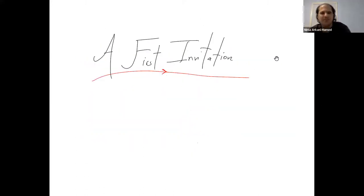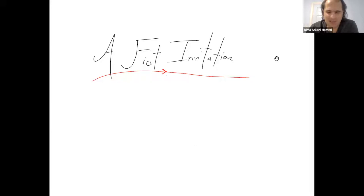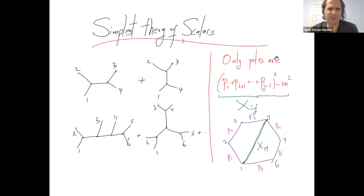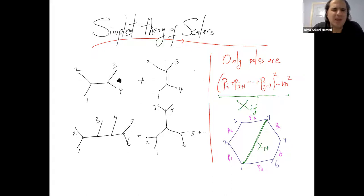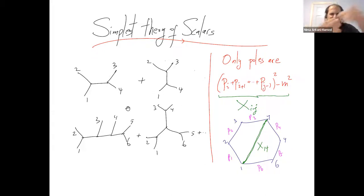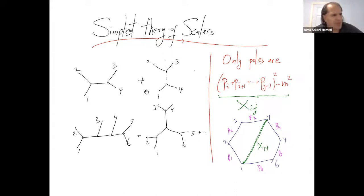I want to begin with a first invitation for how, from a very simple-minded point of view, an experimentalist might discover that there is something deeper — some kind of combinatorial geometry associated with the basic physics of particle scattering. We're going to talk about the very simplest possible theory of scalars, a theory with cubic interactions, fundamental three-point interactions, at tree level only.